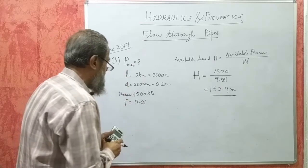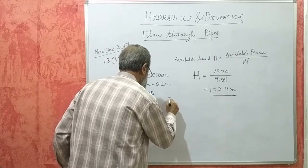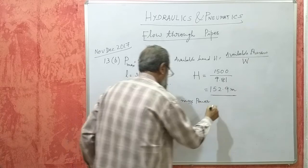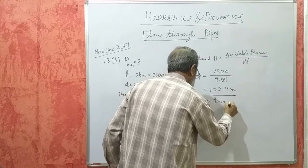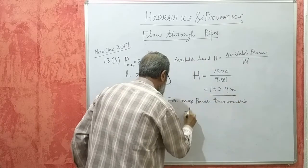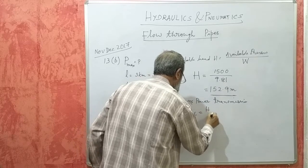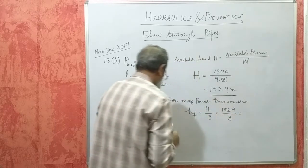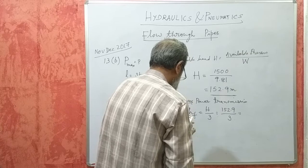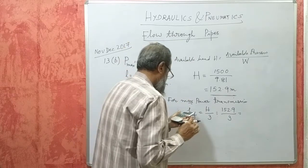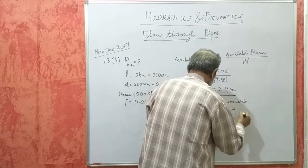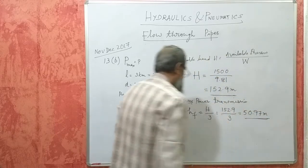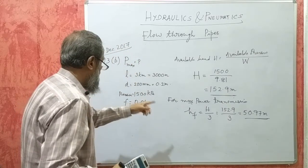Now we know the condition for maximum power transmission: the head loss due to friction HF must be one third of the available head. That is, HF = 152.9 divided by 3, which works out to 50.97 meters.